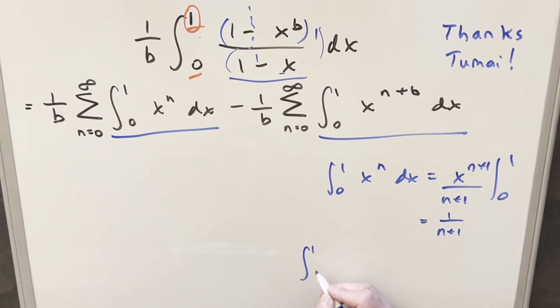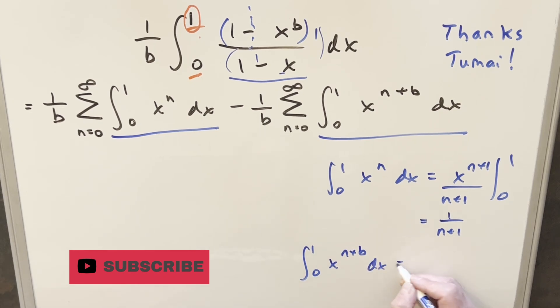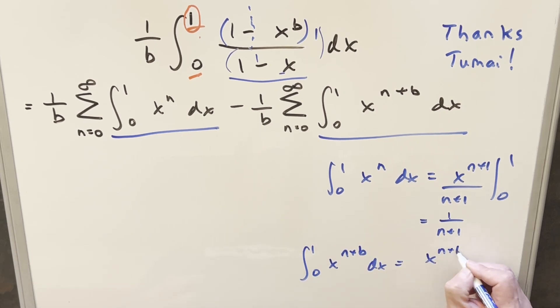Now for this second one, basically the same thing, x to the n plus b, just a slightly different constant. We integrate with power rule, n plus b plus 1 over the same constant, n plus b plus 1, evaluated from 0 to 1. Again, the 0 is nothing. You plug in 1 here and we get 1 over n plus b plus 1.